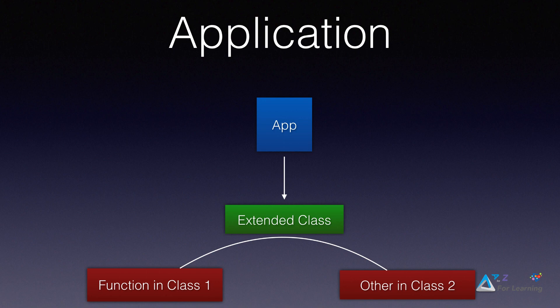For example, I have in class number 1 three functions — it's the base class, the parent class. Class number 2 uses more functions. But class number 1 doesn't get to the functions in the extended class unless you give permission. Class number 2 will get to the functions that are called public functions or extended functions.